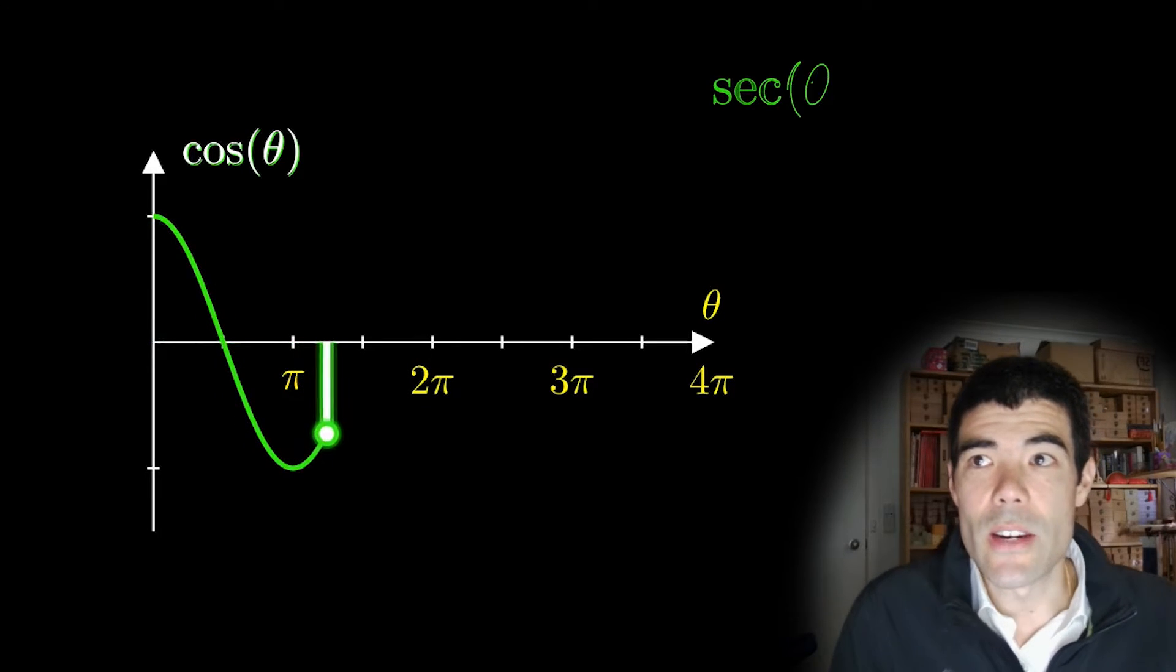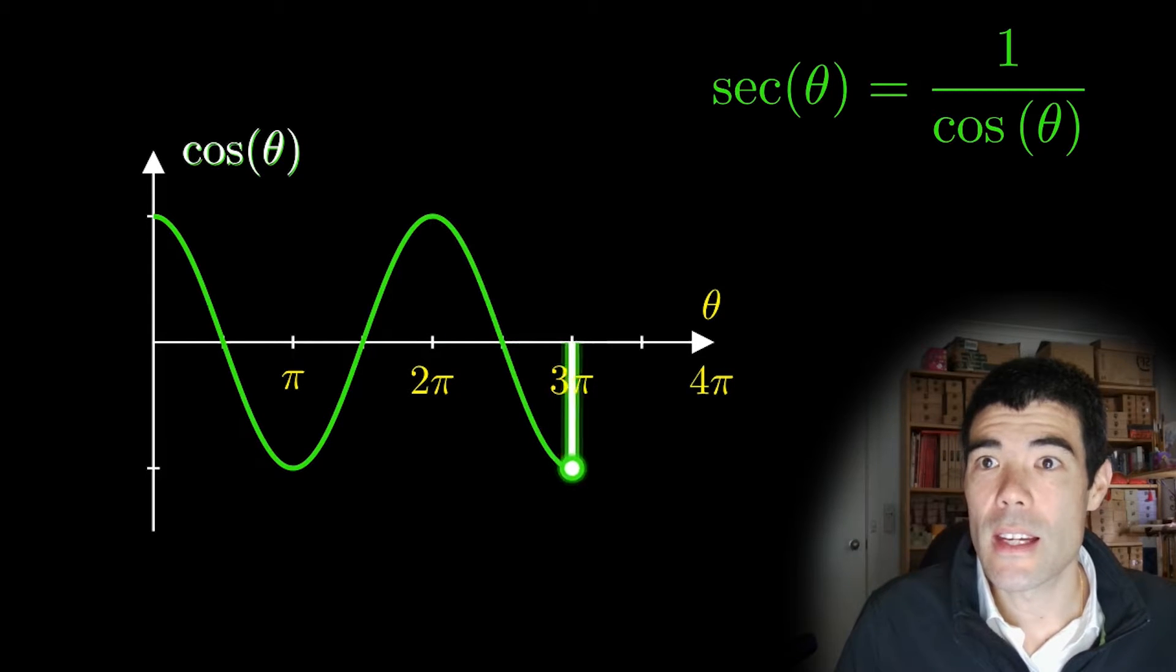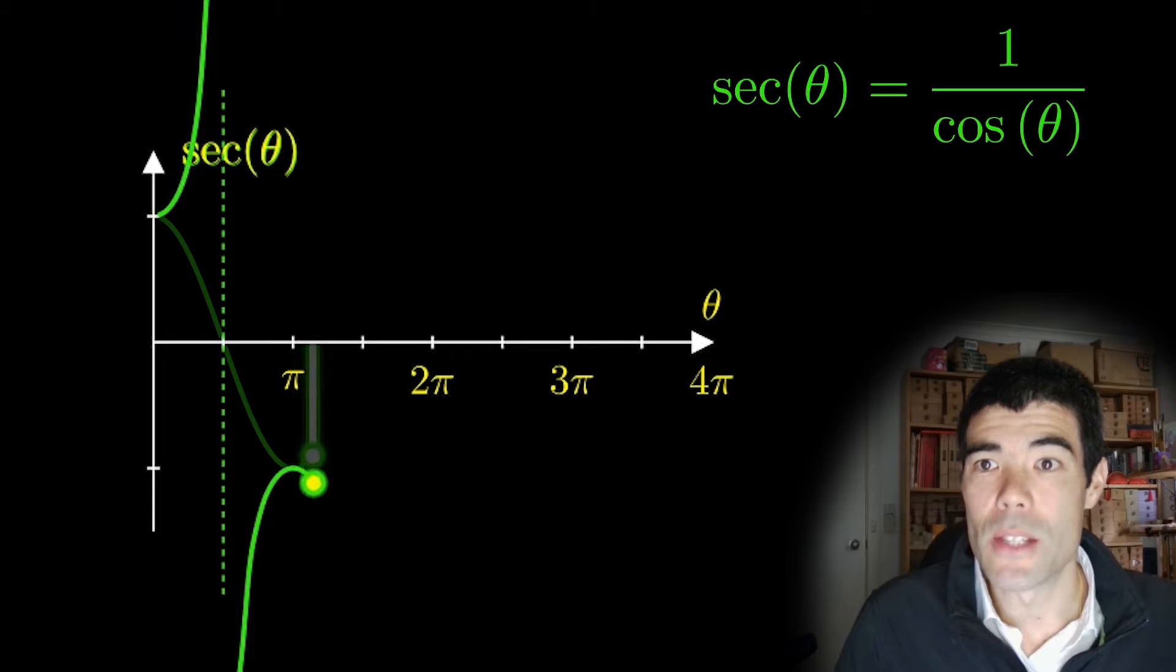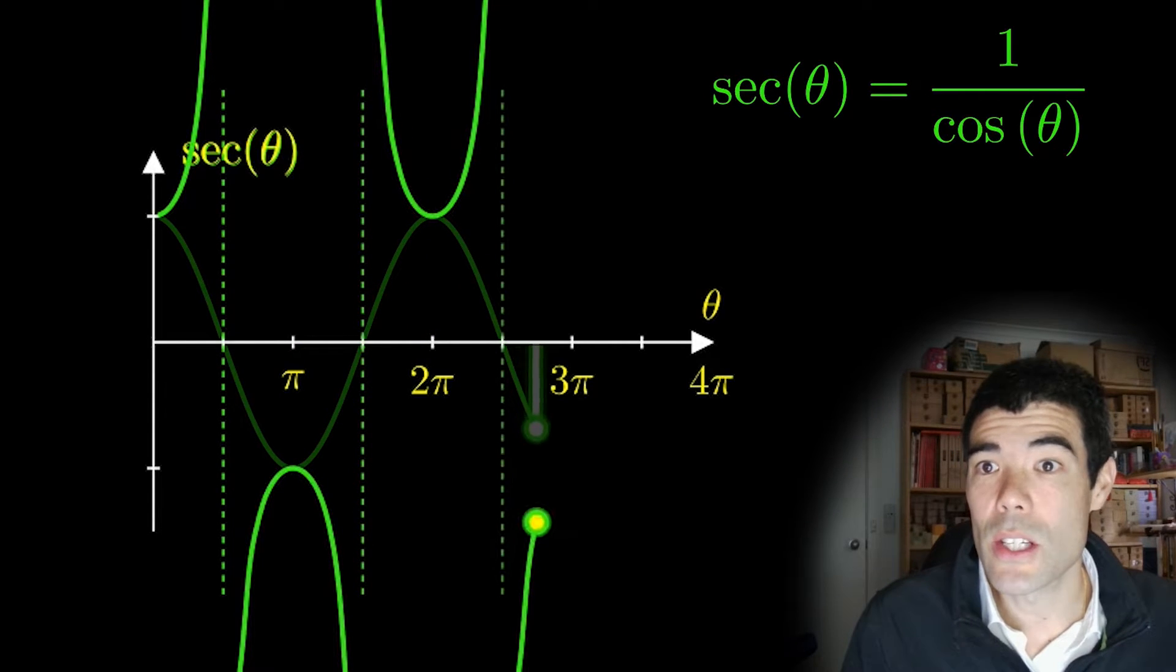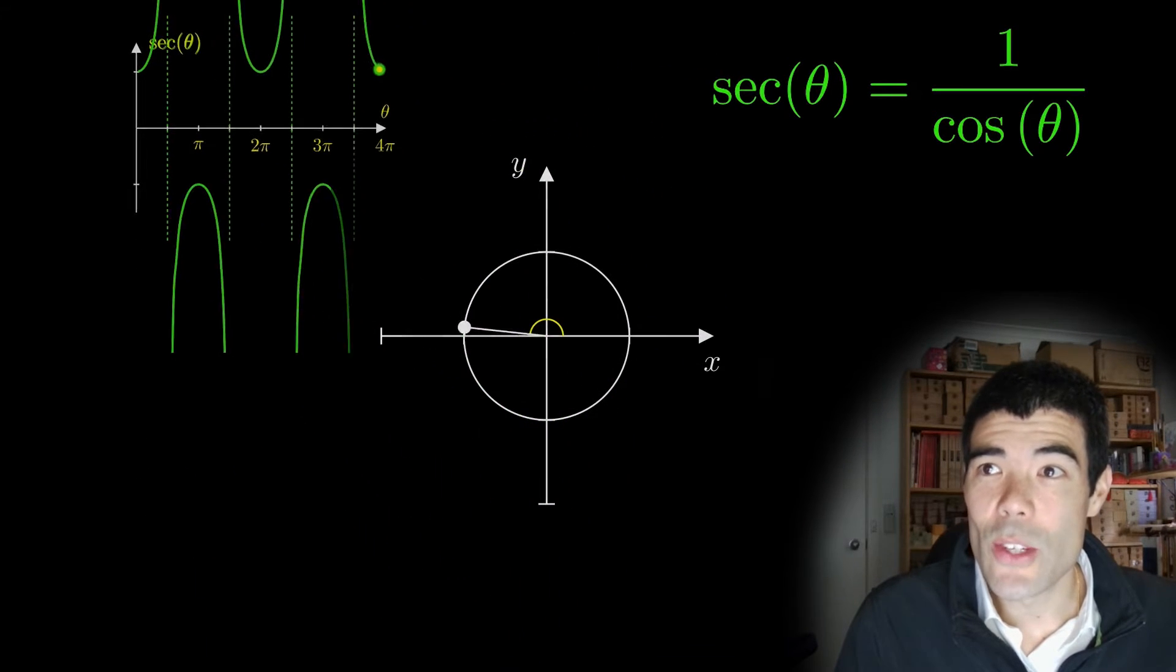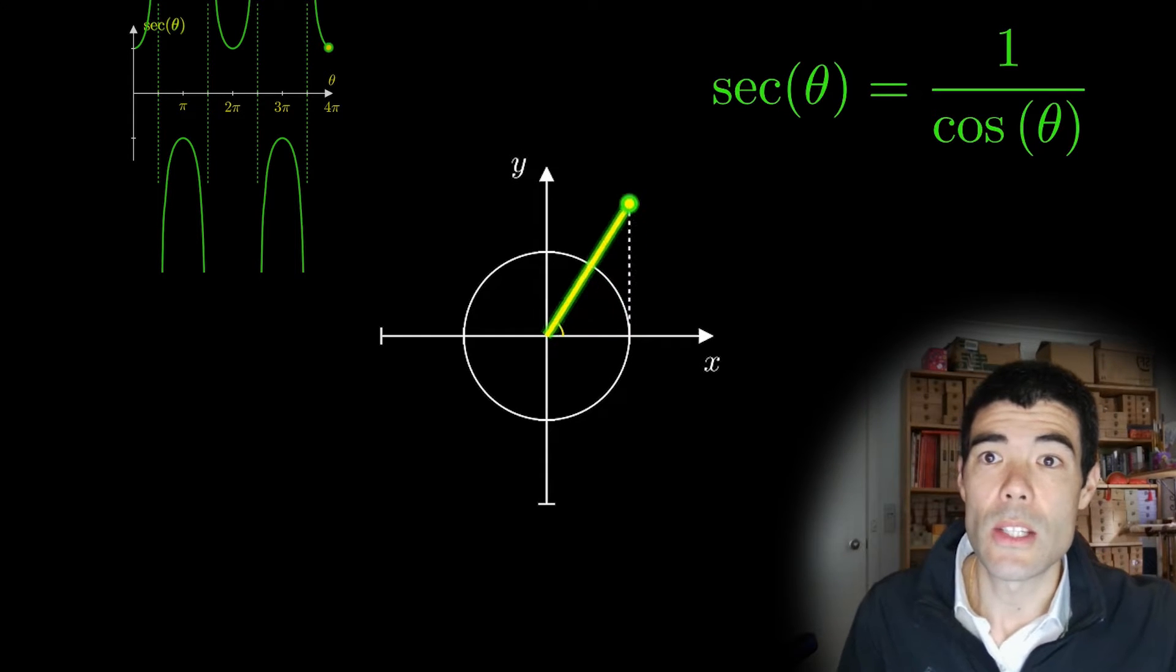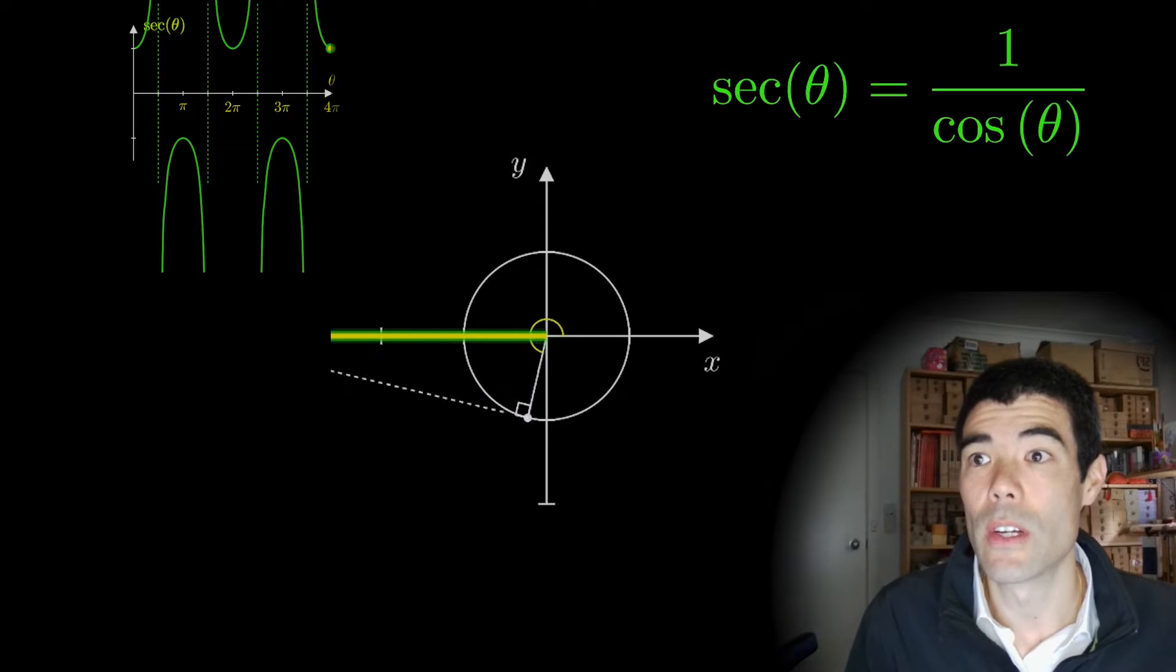The secant function sec theta is 1 divided by the cosine function. The graph of sec theta has asymptotes when cosine theta is 0. We cannot divide by 0, and as the cosine function approaches 0, the secant function approaches infinity or negative infinity. But you might want to know where is the secant on the unit circle? In this video we'll show two places where we can put the secant on the unit circle and why these are equivalent to 1 over cos theta.